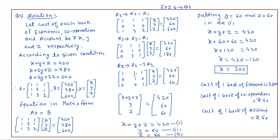We have to convert to the upper triangle form. This is easy. Reading the equations: 1x plus y plus z equals 420, 0x plus 1y plus 0z gives y, and 0x plus 0y plus 1z. So y is equal to 60 and z is equal to 60.